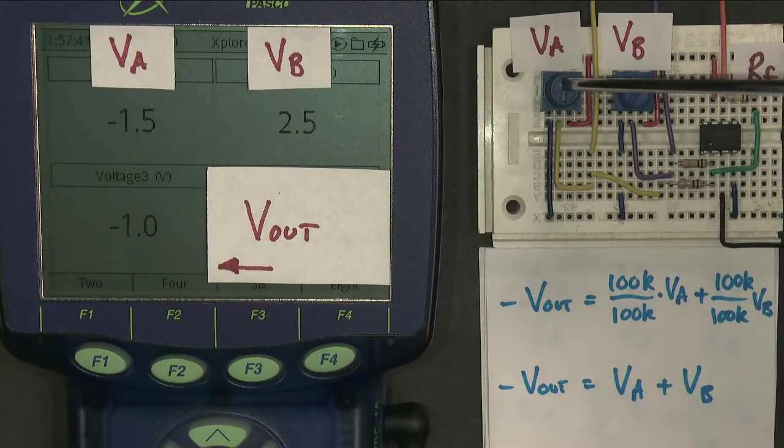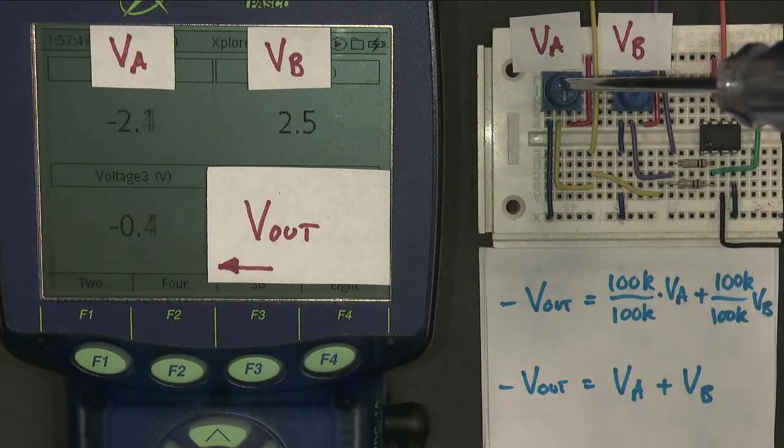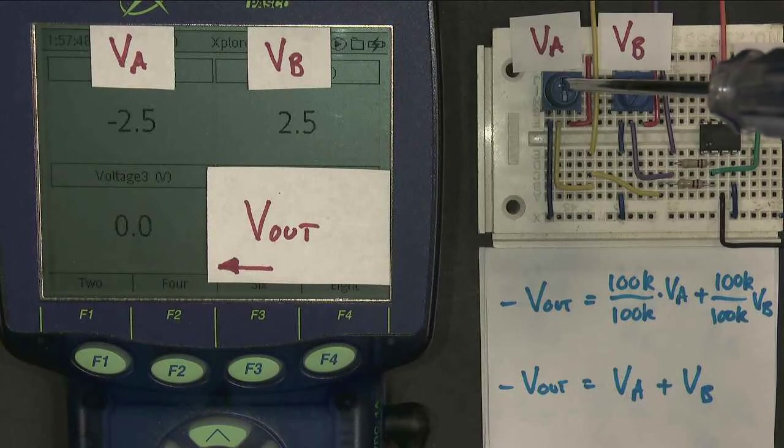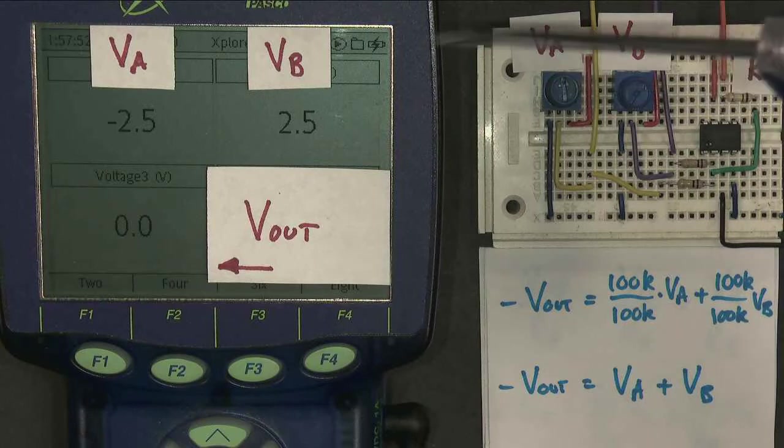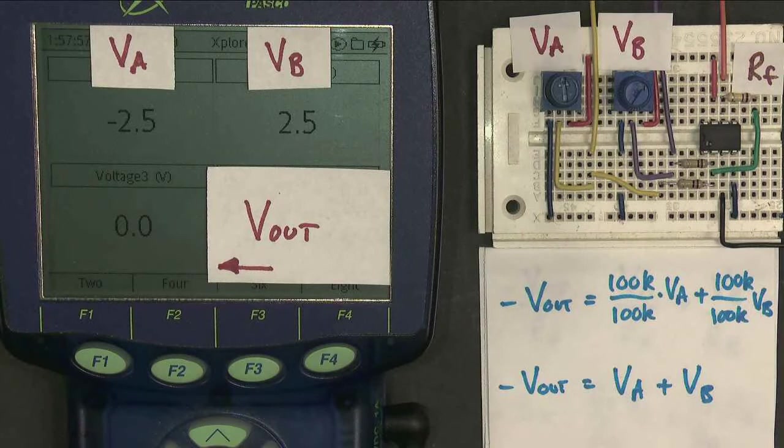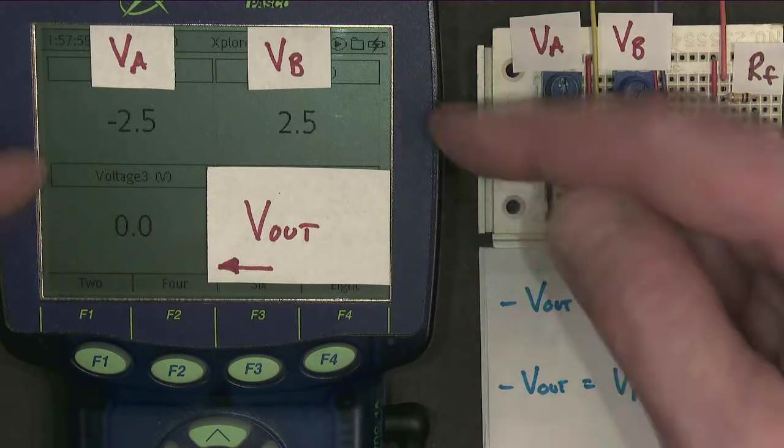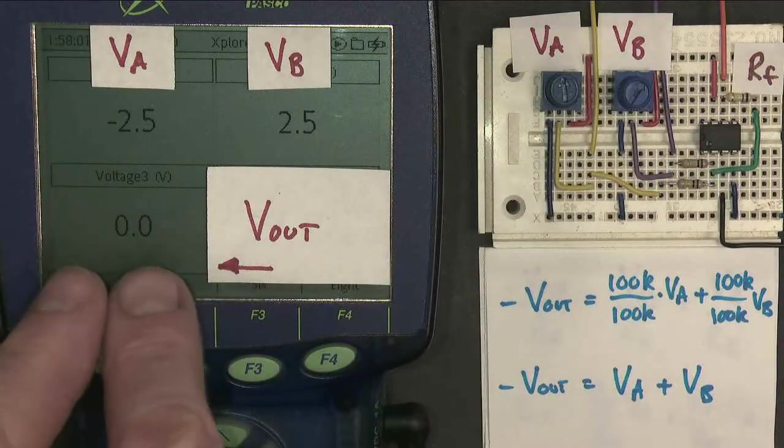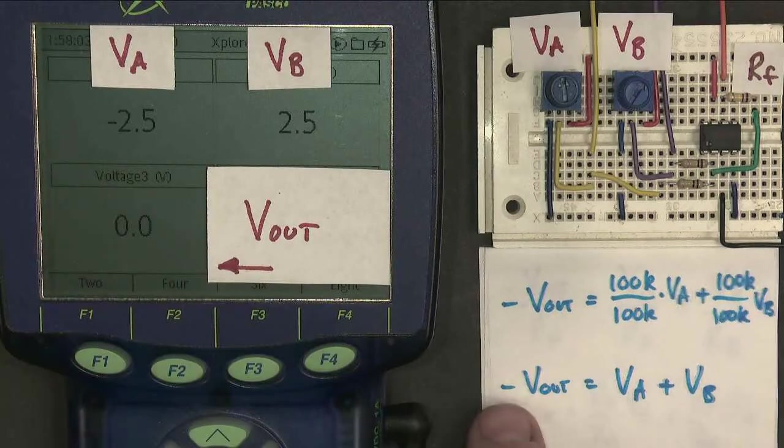And if I make the two inputs the same size, the opposite sign, then they cancel out. Plus 2.5 minus 2.5 gives me zero. So my summing amplifier is adding up my two input voltages to give me my output voltage with a minus sign.